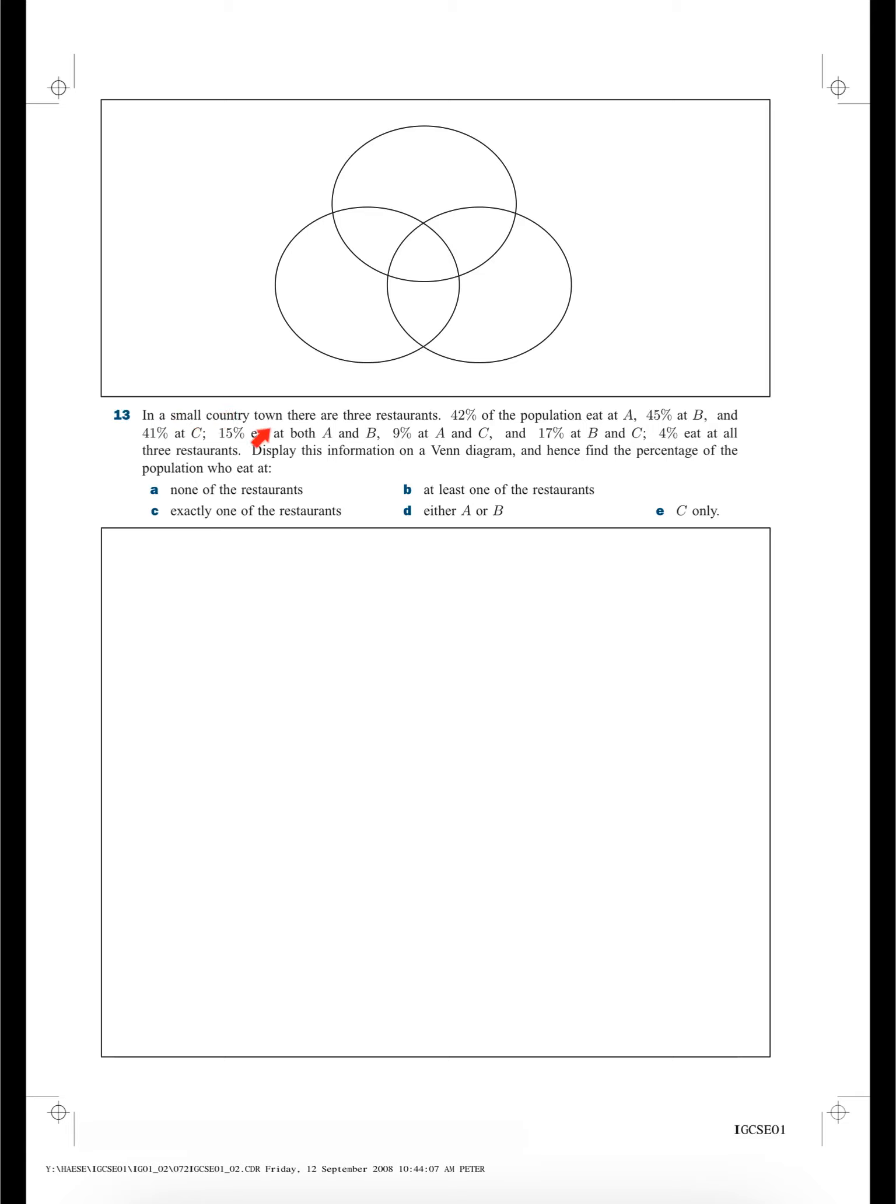In a small country town, there are three restaurants. 42% of the population eat at A, 45% at B, and 41% at C. 15% eat at both A and B, 9% at A and C, and 17% at B and C. 4% eat at all three restaurants.